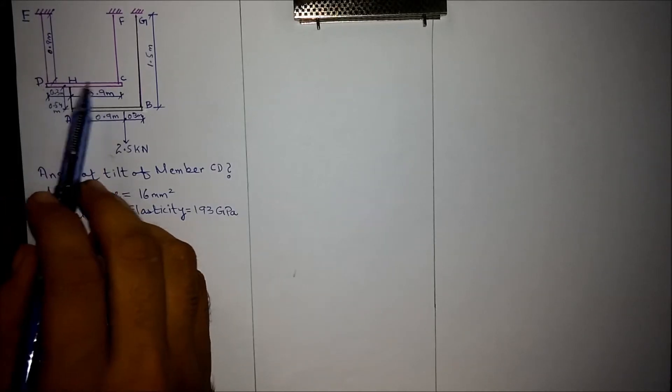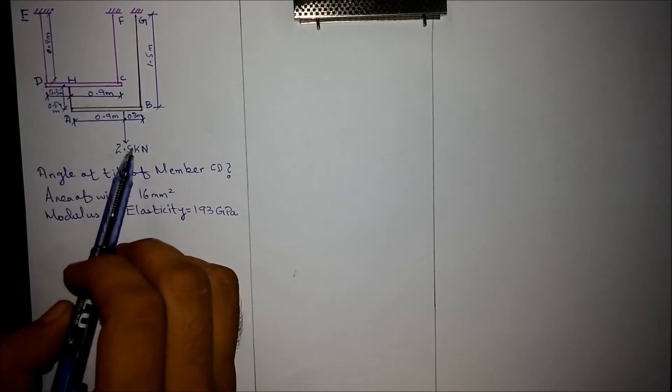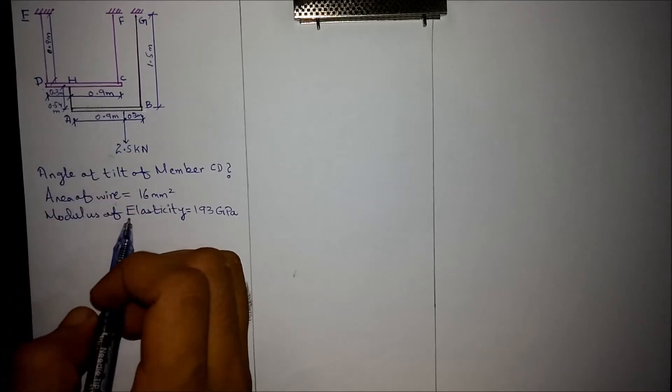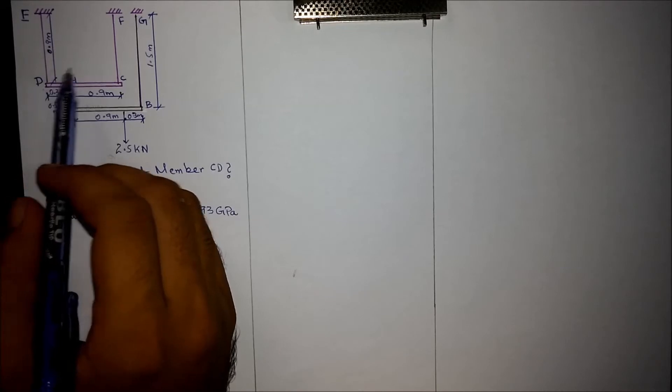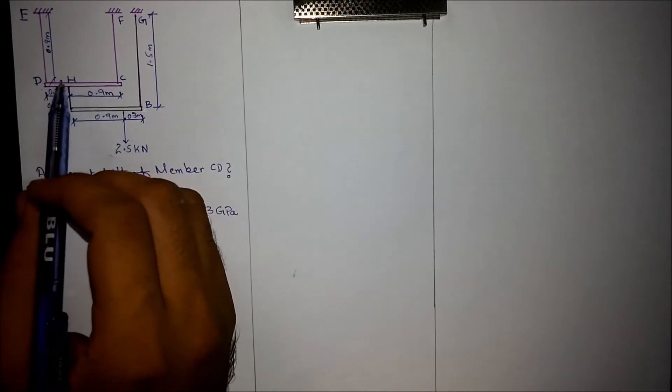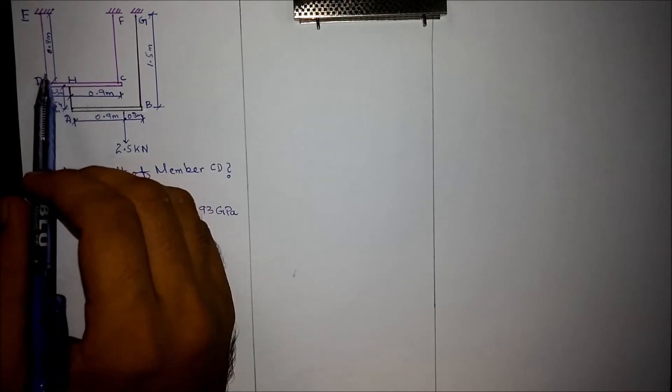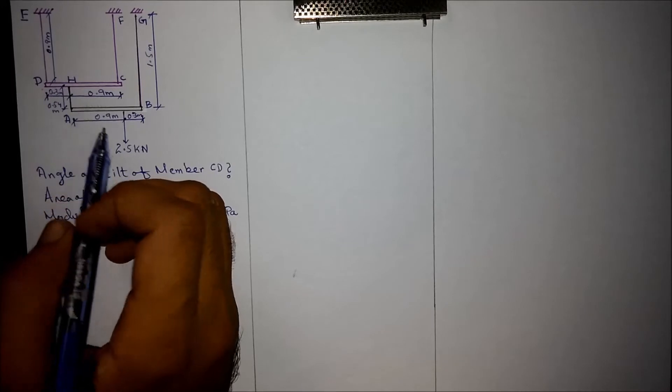For finding out the angle of tilt, we need to find out the change in length of these wires due to this load, which will be by stress and strain relationship. For that, we need to find out the force in each wire and then find stress and then find strain. From strain, we will find the change in length, and from change in length, we will find out the angle of tilt.